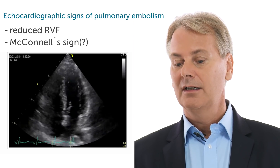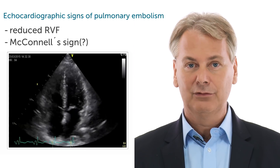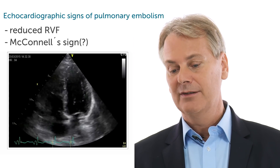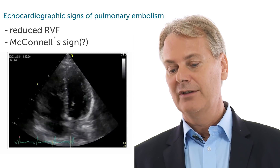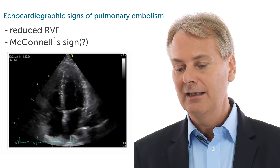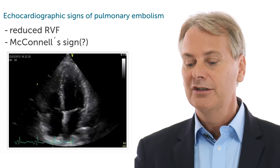You might even have a discrete sign of McConnell, which is a potential indicator for pulmonary embolism, where you have hyperdynamic function of the apex while the remaining part of the right ventricular function is poor.